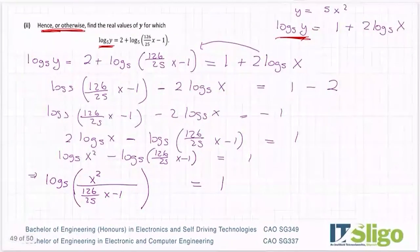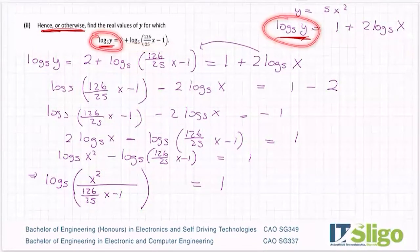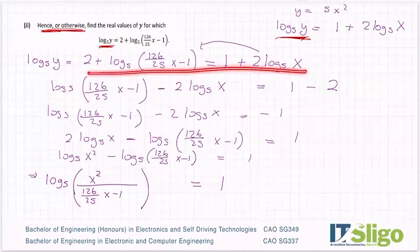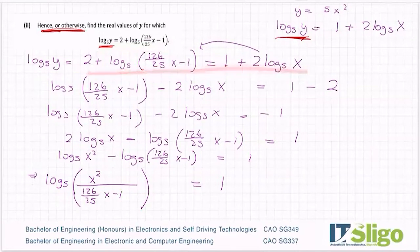So the most important piece to take away from this question is the following. When you have two equations and they're equal to the same thing, you can let the two equations equal each other. And from there on in then it was applying the rules of logs, and then of course algebra and how do you handle fractions and so on and so forth.